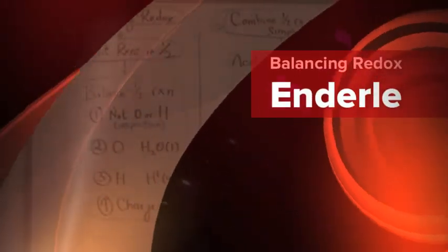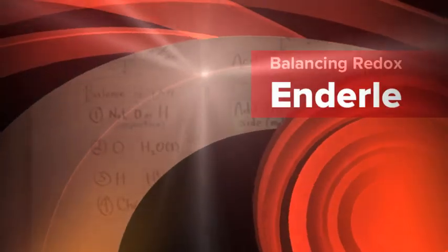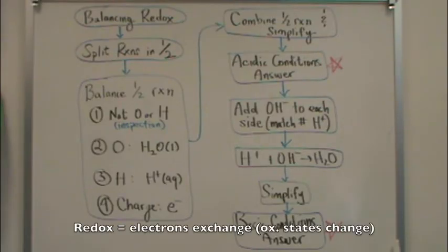I want to give you the basics of balancing what's called a redox reaction and this is the flow chart I'm going to walk you through. First, what's a redox quickly? That's when there's an exchange of electrons. So basically the oxidation states of particular elements are changing.